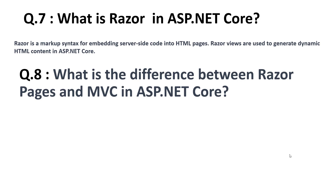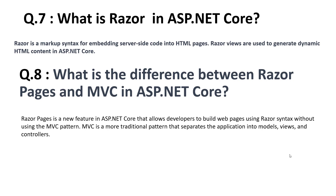The eighth question is: what is the difference between Razor Pages and MVC in ASP.NET Core? Razor Pages is a new feature that allows developers to build web pages using Razor syntax without using the MVC pattern. MVC is a more traditional pattern that separates the application into model, views, and controllers. Razor is a syntax, while Razor Pages is used to generate dynamic HTML from server-side code.